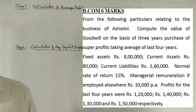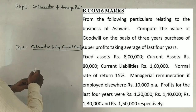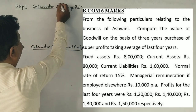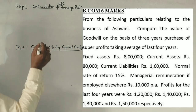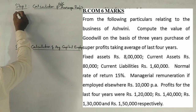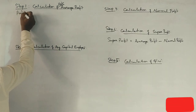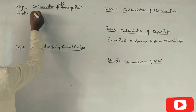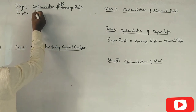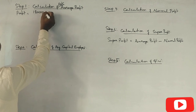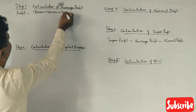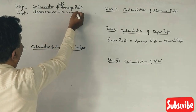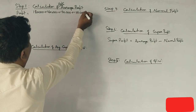Let me ask you to do the calculation of the average profit. Here we calculate the adjusted average profit. Profits: one lakh twenty, one lakh twenty, one lakh forty, one lakh forty, one lakh thirty, one thirty, one fifty, one fifty. Am I right? Okay.